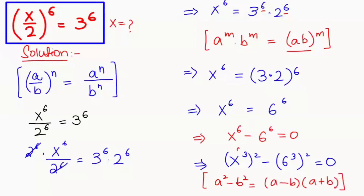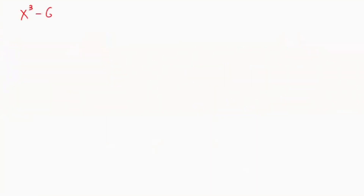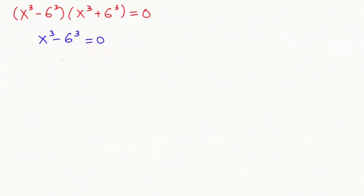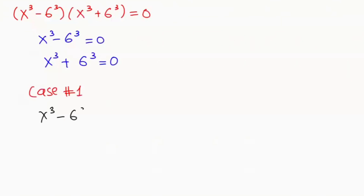So this is our a and b value. The equation turns to (x³ minus 6³)(x³ plus 6³) equals 0. Now we get two cases: Case 1 is x³ minus 6³ equals 0, and Case 2 is x³ plus 6³ equals 0.